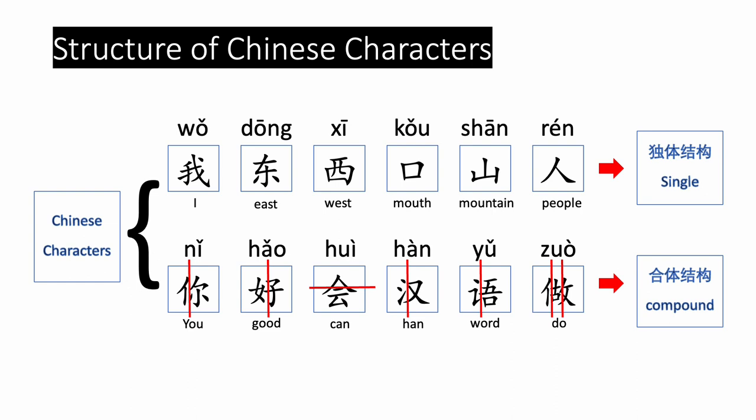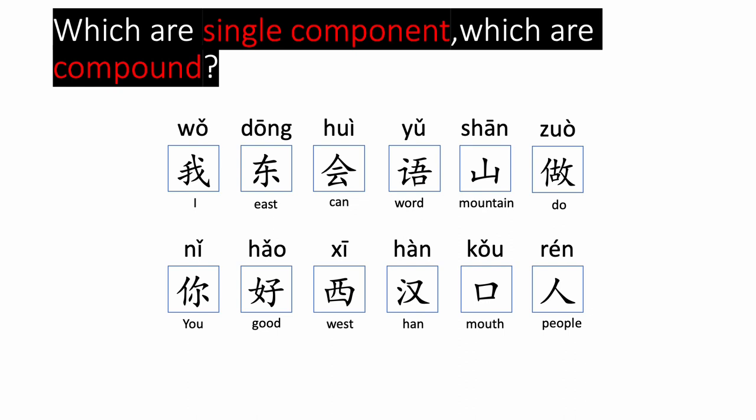Now let's learn two structures of Chinese characters. Look at the two lines of Chinese characters displayed on the screen. The upper line is the single component structure, while the lower line is the compound structure. Single component structure can be regarded as a whole — you cannot take it apart — while the compound structure can be separated into two or more single structures. This is common in Chinese characters, where different combinations often make different characters. Can you find which are single components and which are compound?